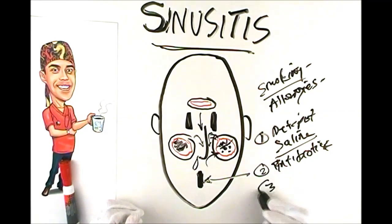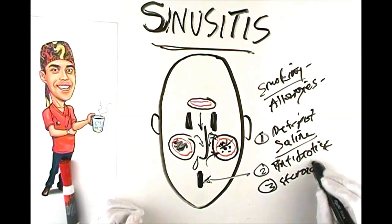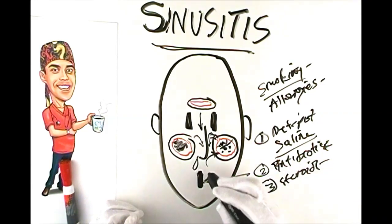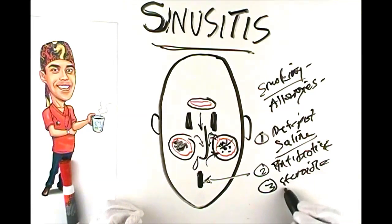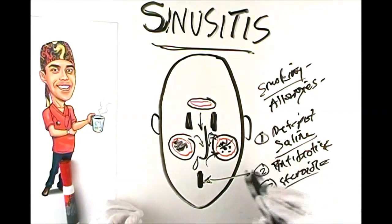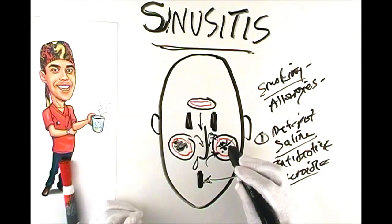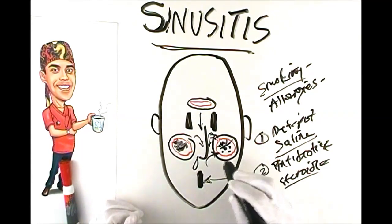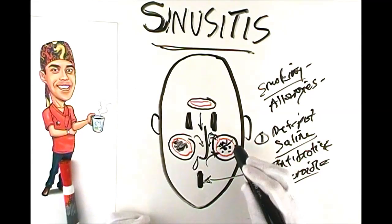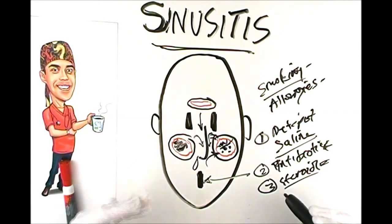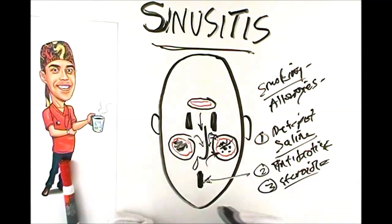The other thing we sometimes use is steroid nasal sprays — sprays that you spray up into the nose. These are anti-inflammatory steroids, not bodybuilding steroids. What they do is reduce the inflammation of the sinus lining and settle it back to normal, which stops mucus production — basically robbing the bacteria of their nutrient source, which ultimately kills them.